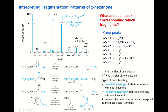Let's consider mass number 43 first. The original structure has a carbon-carbon bond that is broken. Two electrons form the single bond — one electron goes to each side. One side becomes a radical, which is not detected by the mass spectrometer. The other side becomes a positive ion with mass-to-charge ratio of 43, and that is what is detected.